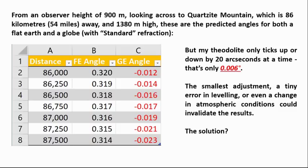there is actually a problem with what I tried to do on the first attempt and that is that these angles don't change by very much. So the theodolite that I rented, the fine tuning adjustment dial only ticks up or down by 20 arc seconds at a time and 20 arc seconds is only 0.006 degrees. So as you can see from these numbers, if I am off by 0.006 degrees and that could just be a tiny adjustment of the fine tuning dial, it could be a tiny error in the leveling of the instrument, or it even could be a change in atmospheric conditions, that would invalidate the results.